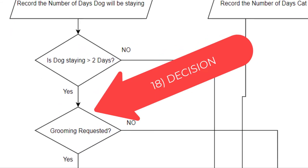So the next question is whether or not they would like grooming. So we ask the question grooming requested. If yes, we move down. If no, we skip and follow along to the next process.